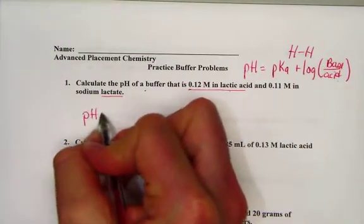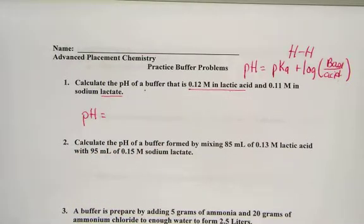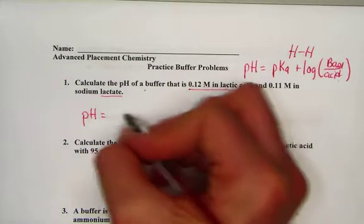So, we need to calculate pH. Using Appendix D, I start by finding lactic acid Ka value 1.4 times 10 to the negative fourth.